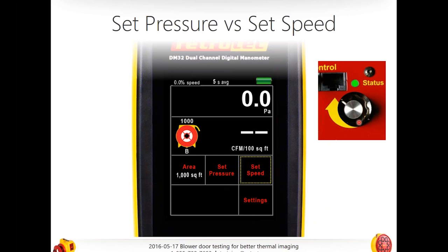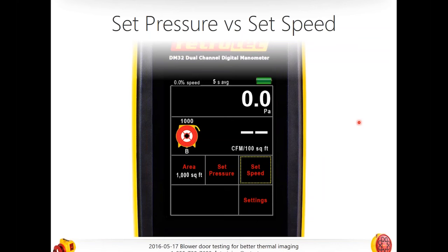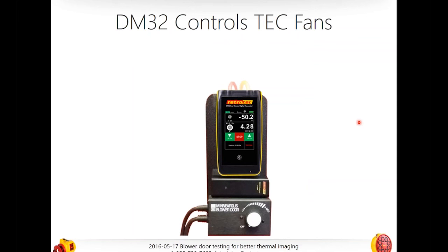You might even want to use the manual knob if you're doing a lot of testing and haven't had a chance to charge your gauge. You don't really need the gauge running to use an IR camera — you just need a pressure difference, and you can use the knob on the side. The reason to use set speed: when you don't care about the specific pressure, when you're not looking for specific quantitative results, but just want to depressurize a building to achieve certain effects — in this case, for infrared camera imaging.